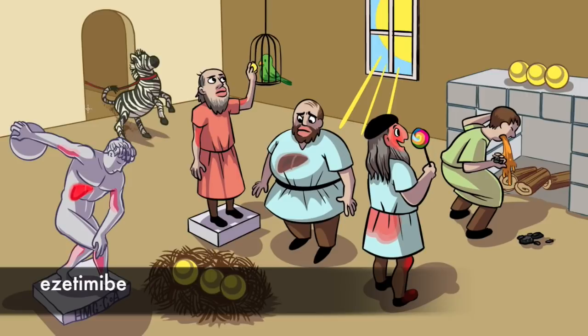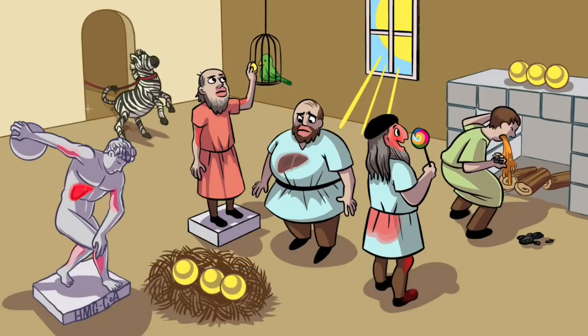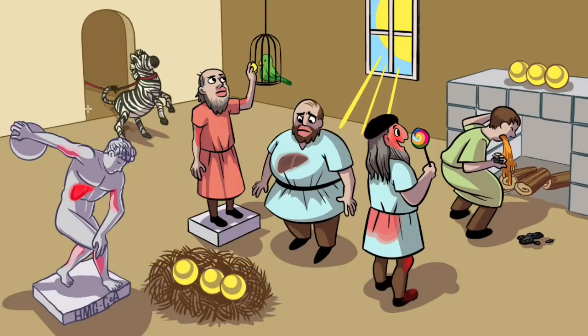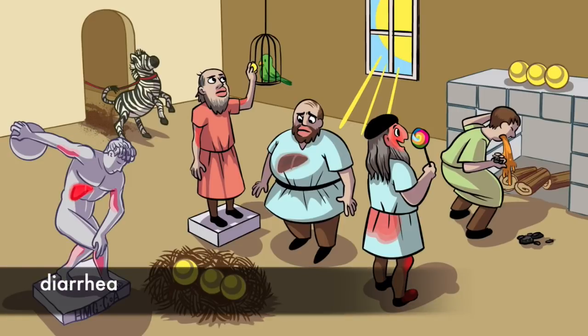The last drug is ezetimibe, and we're going to use a zebra for this. We'll have the zebra entering the studio because ezetimibe blocks cholesterol absorption at the intestinal enterocytes. Notice that our zebra is blocked from entering too far. What's that coming out of this zebra's rear end? It looks like diarrhea, a common side effect.